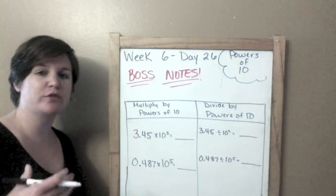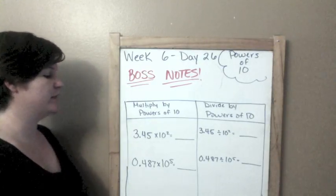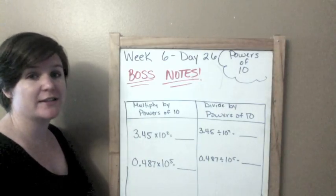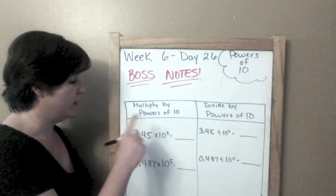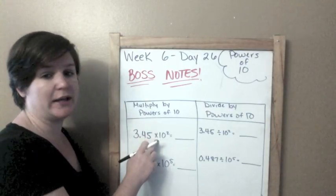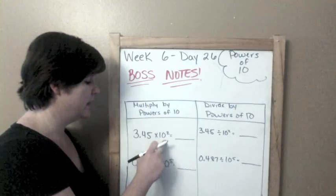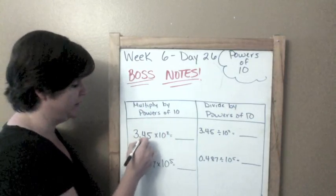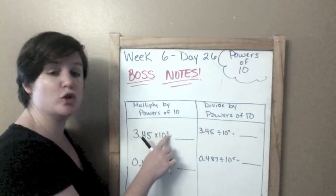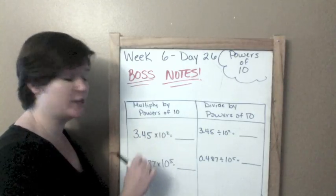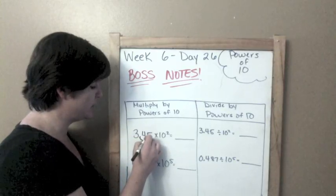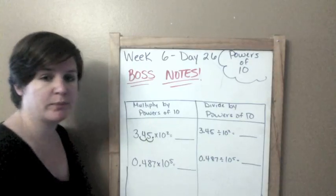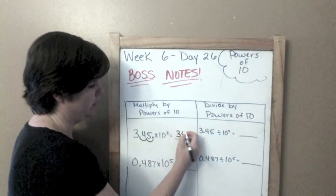Here I have 3.45 times 10 to the second power. Because I'm multiplying by a power of 10, I'm making this number bigger. I'm going to take my decimal and shift it two places, because there's two tens, two places to the right. So one, two, that's where my new decimal goes, so it would be 345.